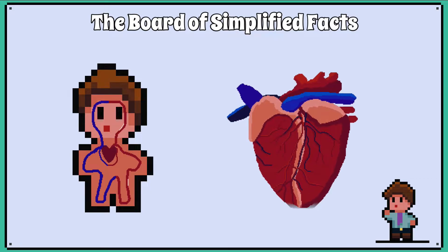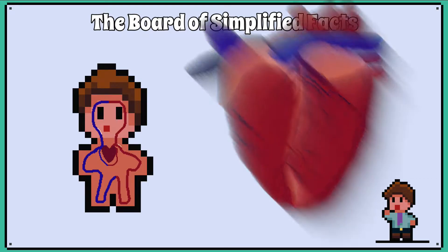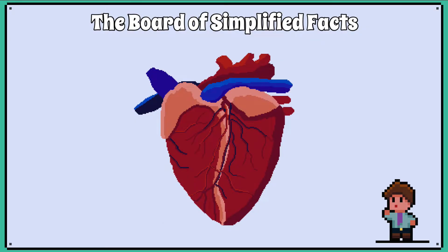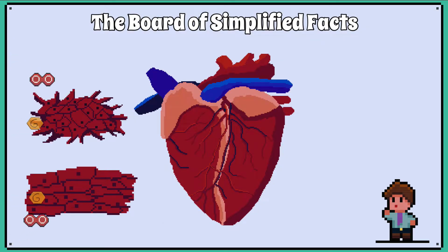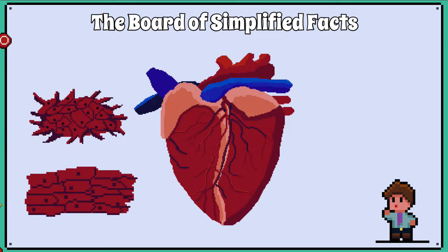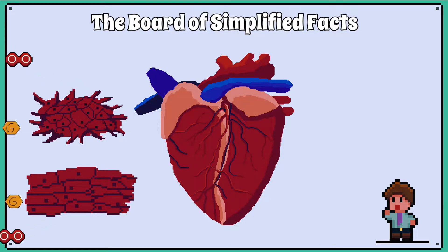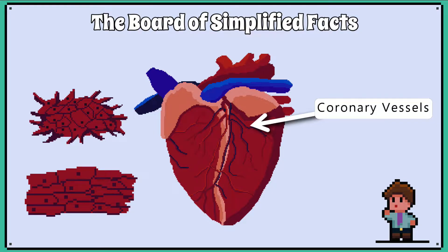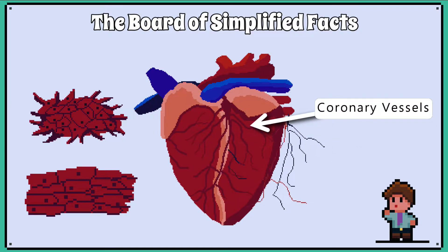The heart is made of muscle and the muscles contract to pump blood around the body. As it is made of muscle tissues and therefore cells, the heart itself needs a blood supply so oxygen, glucose and other nutrients can be delivered via the coronary blood vessels. These can be seen on the outside of the heart.